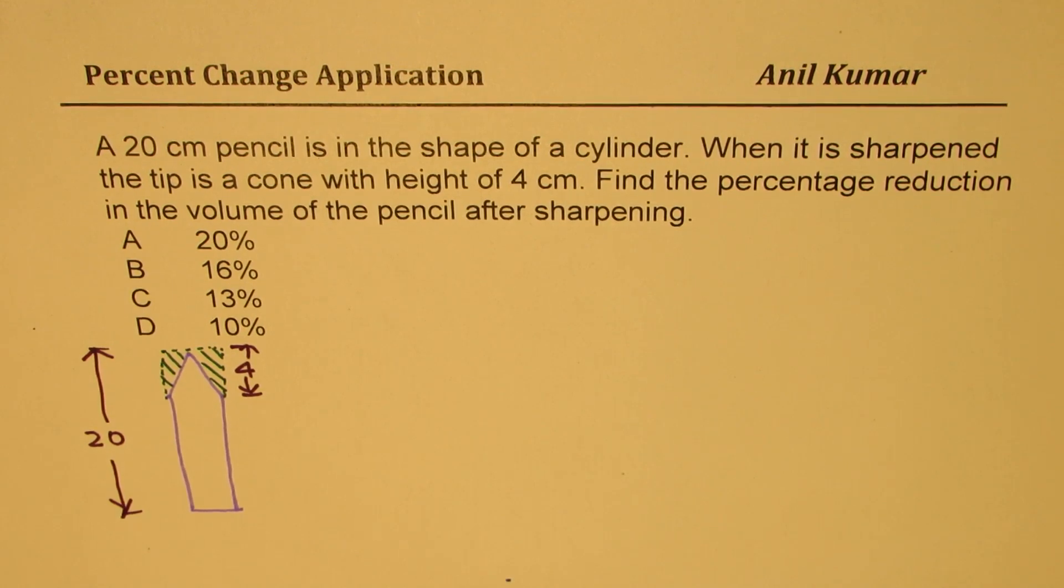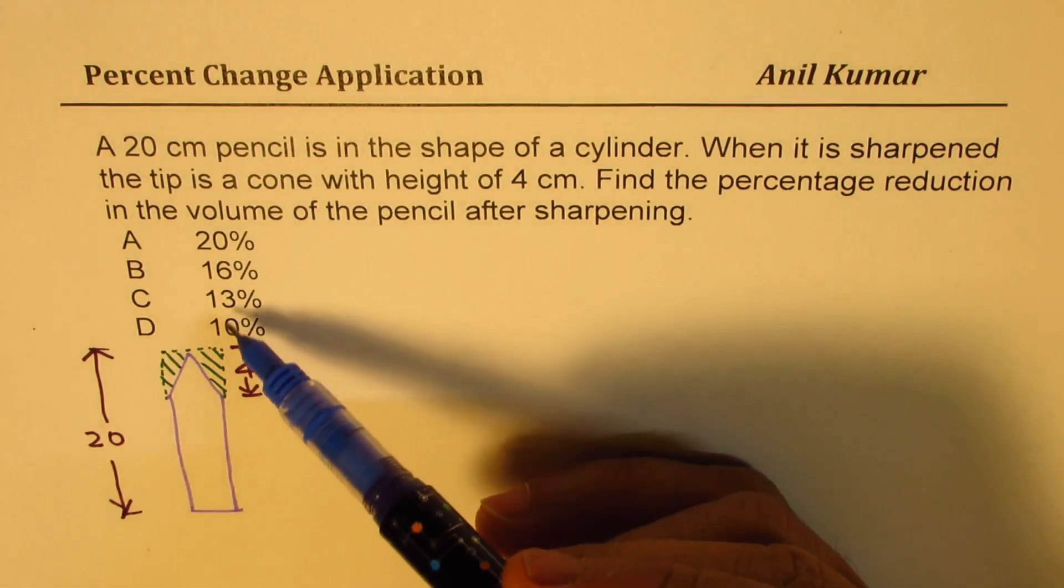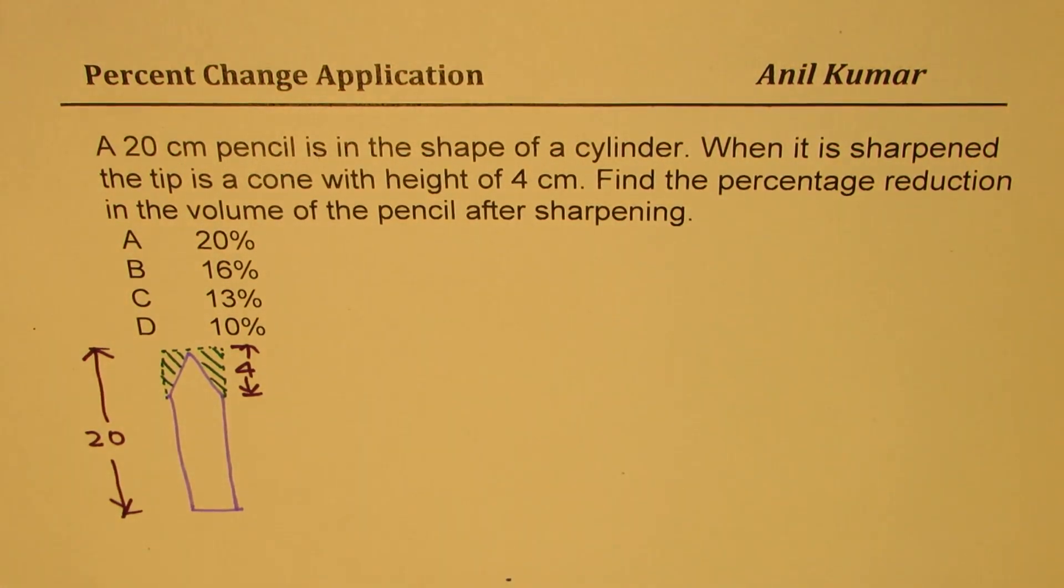So I hope the strategy is very clear to you. You can pause the video, answer the question, and then look into my suggestions. These are the four choices which are very close: 10, 13, 16, 20 percent, reading from D to A. So you need to calculate the answer.